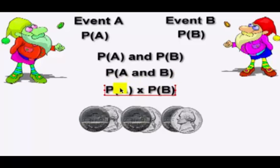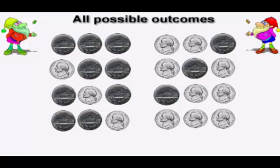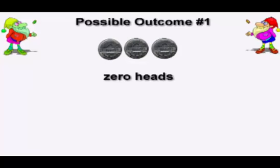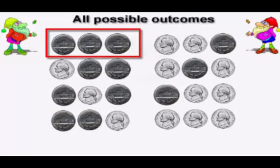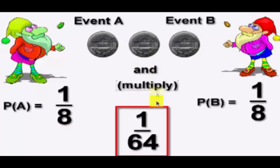Let's list all possible outcomes for three coin tosses. The first possible outcome is that they both get zero heads. How many ways are there to get zero heads out of these eight? Just one. So the probability of getting zero heads is one out of eight for both of these guys. We want P(A) and P(B), and 'and' always means multiply. So we have a one in 64 chance that they will both get zero heads.